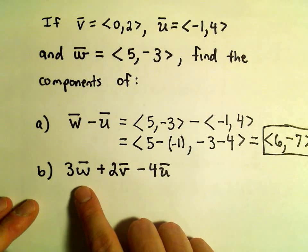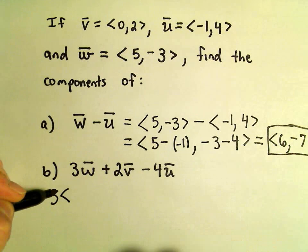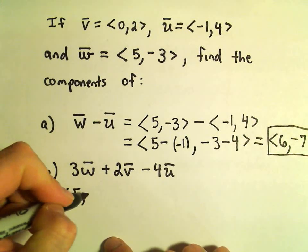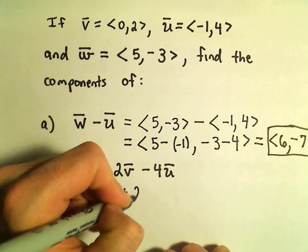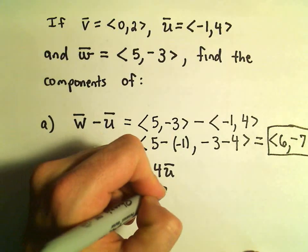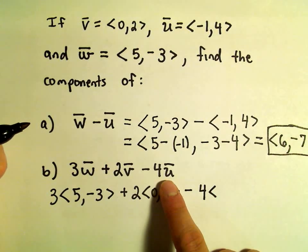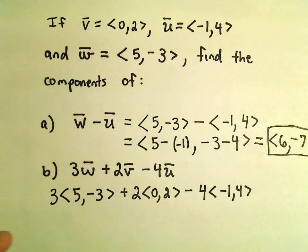Okay, so part B, kind of combining both ideas. It says take 3 times vector W, which has components of 5 and negative 3, plus 2 times vector V, which has components 0 and 2, minus 4 times vector U, which has components negative 1 and 4.